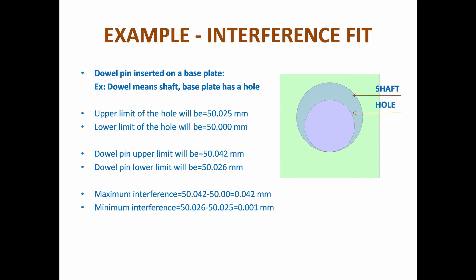Example of interference fit: a dowel pin inserted on a base plate, where the pin is the shaft and the base plate has a hole. Upper limit of hole: 50.025 mm; lower limit of hole: 50 mm. Dowel pin upper limit: 50.042 mm; lower limit: 50.026 mm. Maximum interference = 50.042 minus 50 = 0.042 mm. Minimum interference = 50.026 minus 50.025 = 0.001 mm.